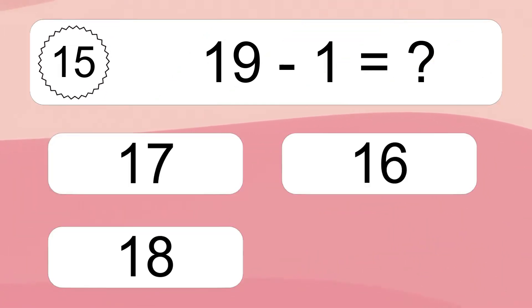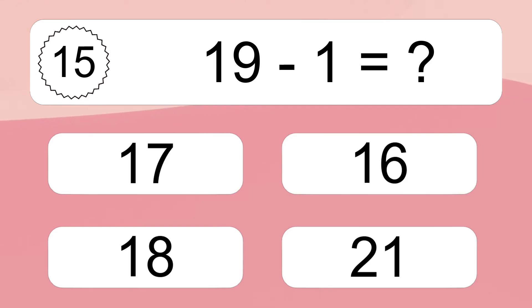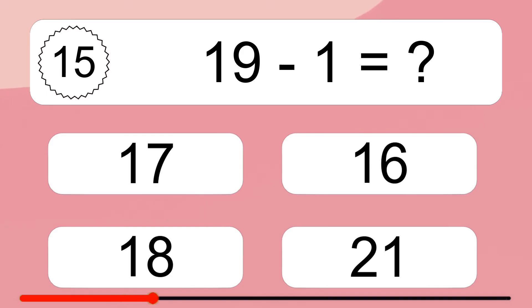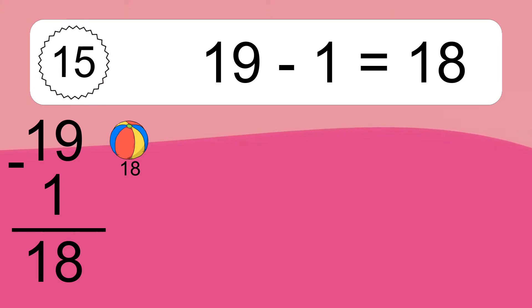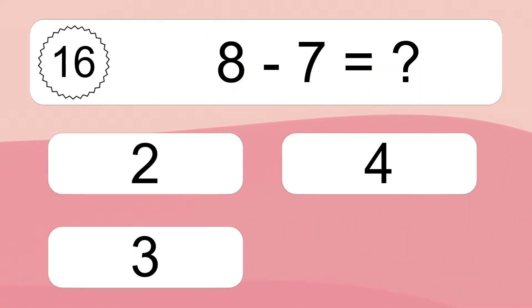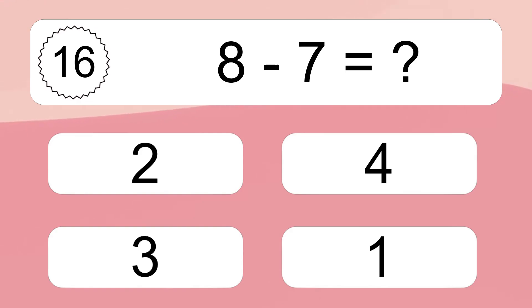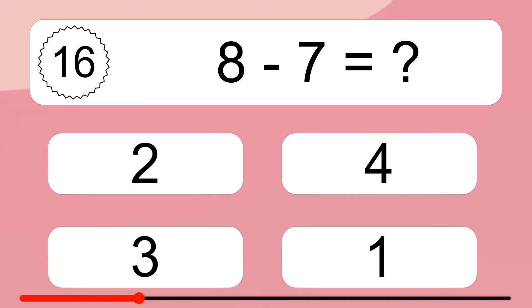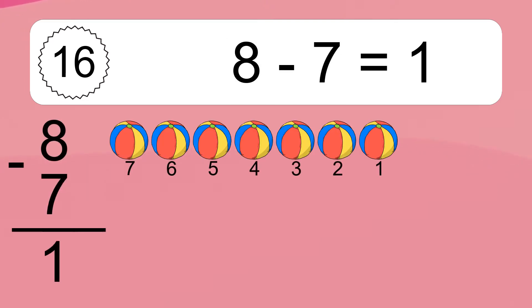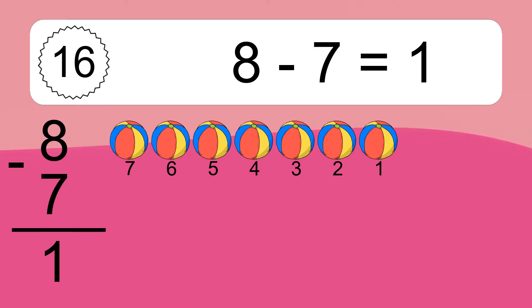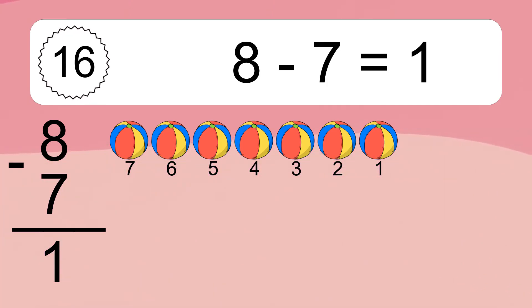19 minus 1 equals what? 19 minus 1 equals 18. Let's count it: 18. 8 minus 7 equals what? 8 minus 7 equals 1. Let's count it: 7, 6, 5, 4, 3, 2, 1.